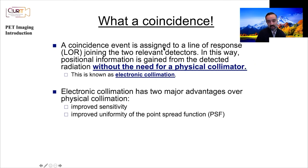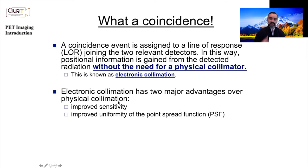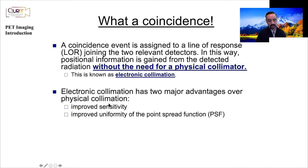A coincidence event is assigned to a line of response joining the two relevant detectors. Position information is gained from the detector radiation without the need for a physical collimator — you know the direction and angle of the line of response without a physical collimator. This results in major improvements in sensitivity — compared to a typical parallel-hole collimator, you could improve sensitivity by two orders of magnitude. The SPECT imaging world has also improved with novel collimator designs like pinhole collimators, while PET has improved through electronic collimation.